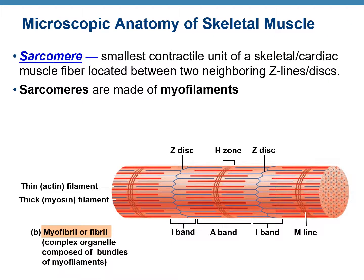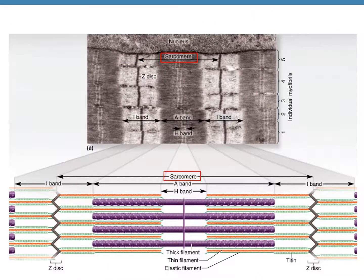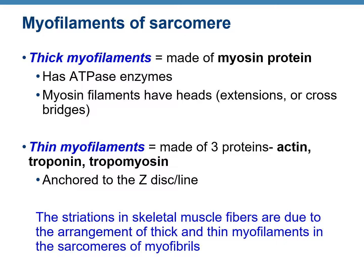A sarcomere is defined as the smallest contractile unit of a muscle fiber, located between two neighboring Z-lines or Z-discs. Sarcomeres are made up of thick and thin myofilaments. The thick myofilament is mainly made up of a protein called myosin and contains ATPase enzymes. The thin myofilaments are made up of three proteins: actin, troponin, and tropomyosin. The striped appearance of skeletal muscles is due to the alternating arrangement of thick and thin filaments in the sarcomeres.